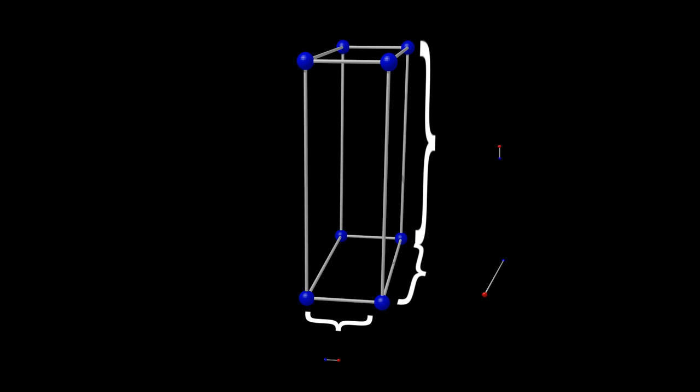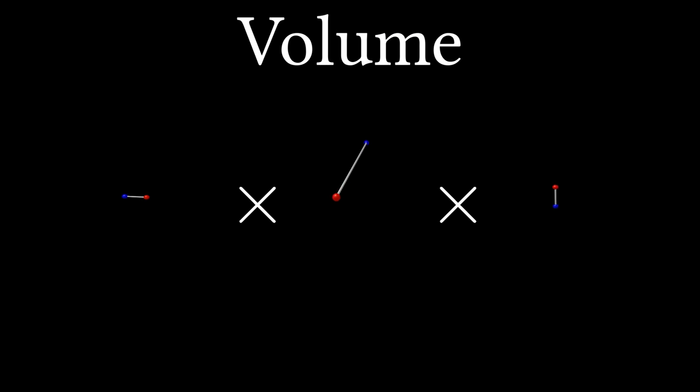So, how much bigger is the object after transformation? Well, it's simply a product of all the eigenvalues, which, in this case, is exactly 9.